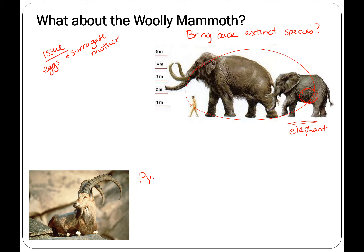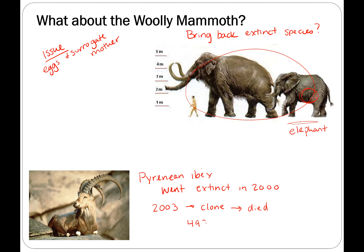This is a Pyrenean Ibex. This beautiful animal went extinct in 2000, and in 2003 they made a clone. They had stored down some tissue, but unfortunately it died right after birth — it had a lung defect. It took 493 embryos, 57 transplants, seven pregnancies, and a goat as a surrogate (a related animal) — one birth that died.